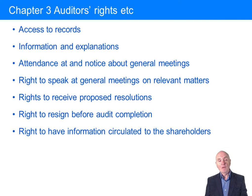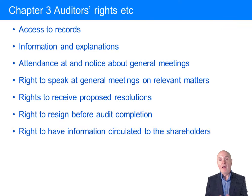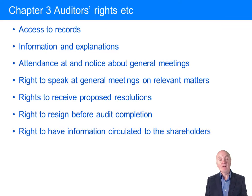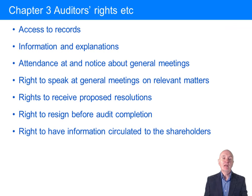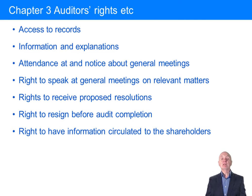The auditor also has a right to have information circulated to shareholders. For example, what would happen if the financial statements came out and they were wrong? Two months later, if a serious error was discovered, it is possible for the auditors to insist that an amended set of financial statements would be sent to the members.